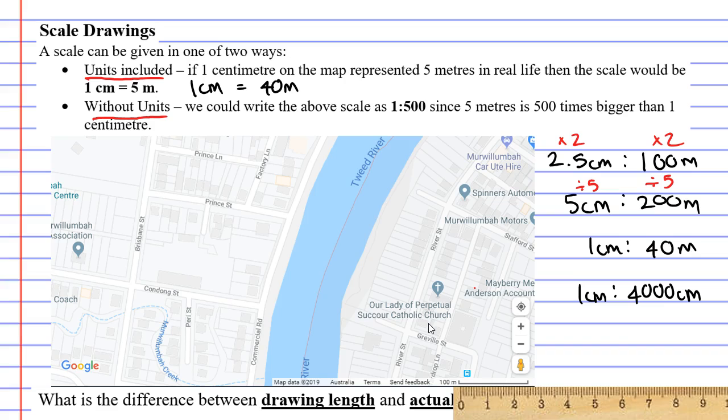Notice that we now have them both in centimeters. Once they're both in the same units you can get rid of the units and we get a scale of 1 to 4,000. So the scale for this map is 1 to 4,000, meaning that everything you see on the map is actually 4,000 times larger than that in real life.